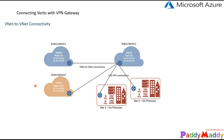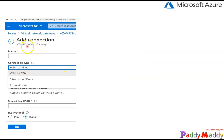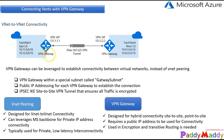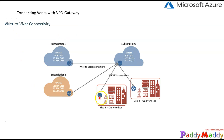Let's consider the high-level design. In this architecture, Subscription 1 and Subscription 2 span East US and West US regions with different subnets. These can be connected by enabling VNet-to-VNet peering or VNet-to-VNet connectivity. If you also have an on-premises network, you can configure a Site-to-Site VPN tunnel using the VPN Gateway's Site-to-Site configuration option.